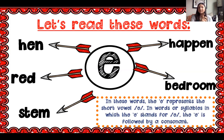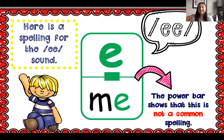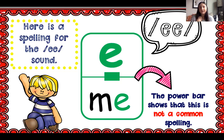Now we're going to talk about the tricky spelling for E. The letter E is tricky because it can represent more than one sound. We just practiced when it says the short E sound; now we're going to practice when it's being tricky and sometimes says the long E. Our spelling for the long E sound is just the letter E all by itself — like in the word 'me.' All of our vowel cards are green because our mouth stays open and lets the air flow through: E — my teeth don't close, my lips don't close.